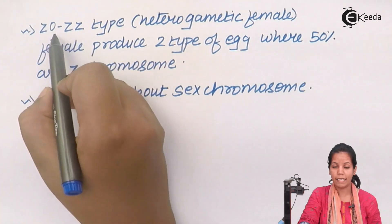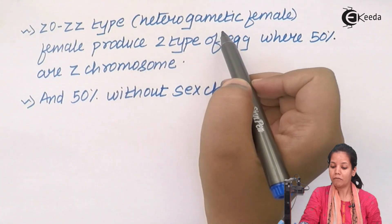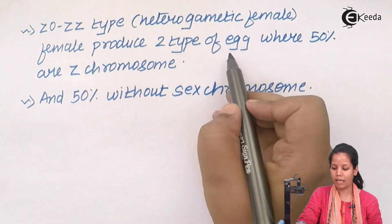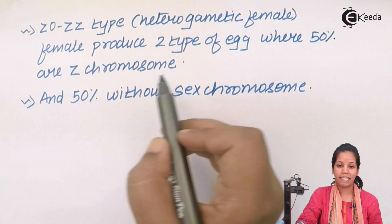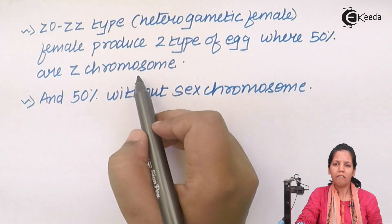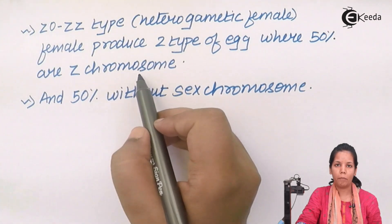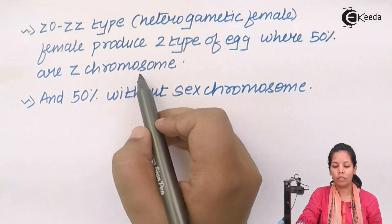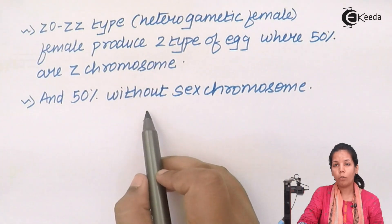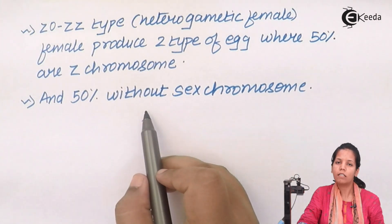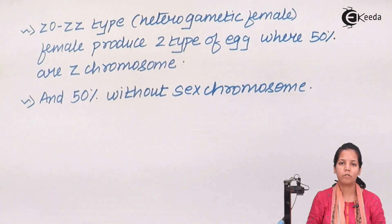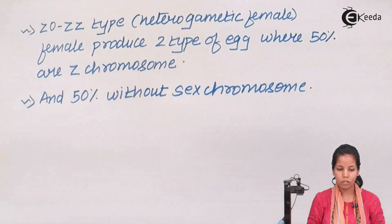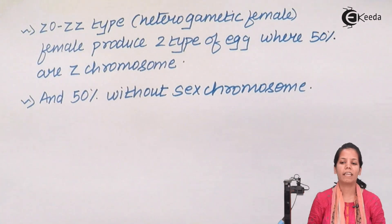The ZZ type heterogammatic female produces two kinds of eggs, where 50% carry the Z chromosome. Avian type chromosomes are very common to this type, and 50% are without a sex chromosome in certain categories of sex determination. So students, in this part of the chapter we studied different mechanisms for sex determination. I hope you are very clear with this concept. Thank you.